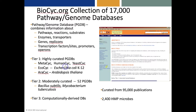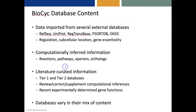Overall, the data in BioCyc has been curated from 95,000 publications, and our databases cover 2,400 Human Microbiome Project microbes. The BioCyc database content consists of information imported from several external databases, including RefSeq, UniProt, and the regulatory database RegTransBase.